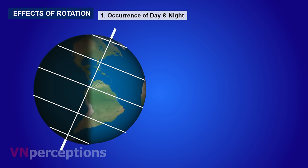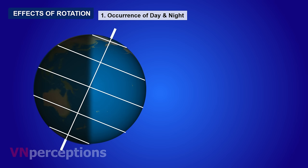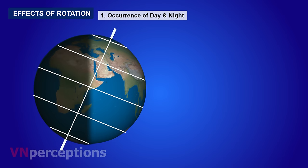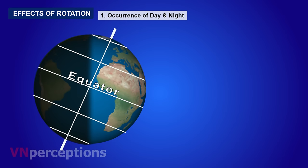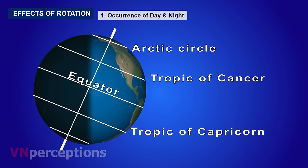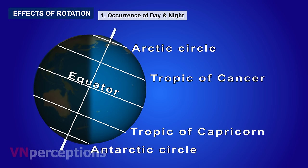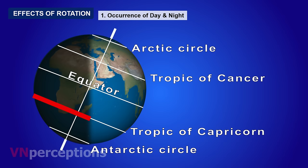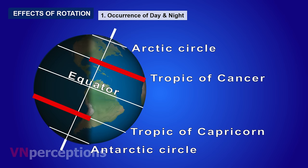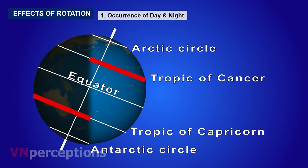The duration of day and night is not equal at all places on the earth because of the inclined axis. If you look at the important latitudes — the equator, Tropic of Cancer, Tropic of Capricorn, Arctic Circle and Antarctic Circle — in the southern hemisphere the duration of night is longer, whereas in the northern hemisphere the duration of day is longer than the night. The reason is the northern hemisphere is facing the sun and the southern hemisphere is facing away from the sun.